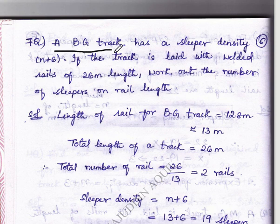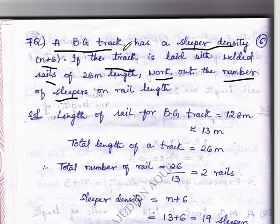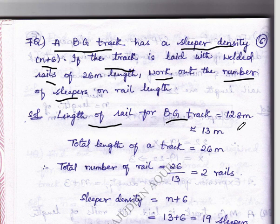For broad gauge with sleeper density n plus 6, if the track is laid with rails that are welded, we have to work out the number of sleepers on broad gauge. First we check the length of rail for broad gauge, which is 12.8 meters for Indian railways.